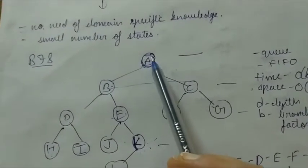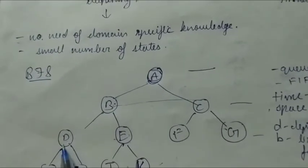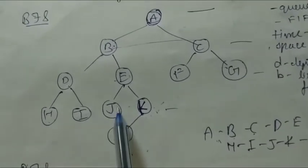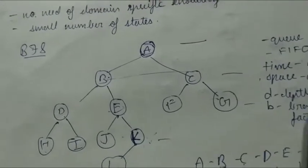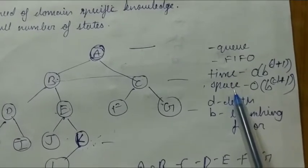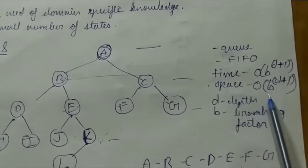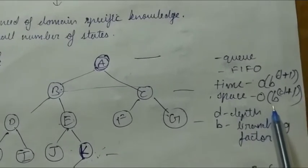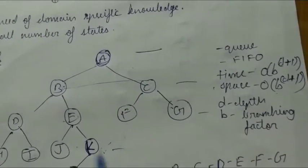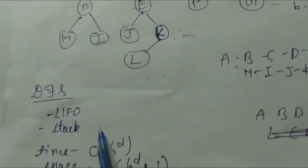In BFS, all nodes are explored level by level. First it explores A, then moves to the next level B and C, then D, E, F, and G, then H, I, J, K, and finally L. Both the time and space complexities are O(b^(d+1)), where d is the depth and b is the branching factor. The branching factor shows the number of child nodes any parent node can have.